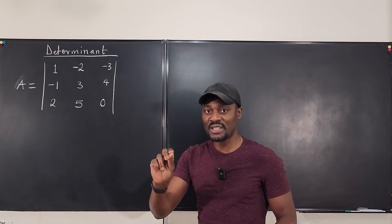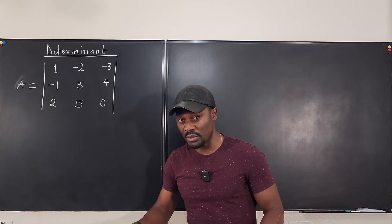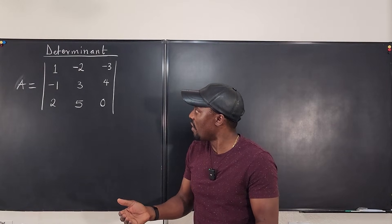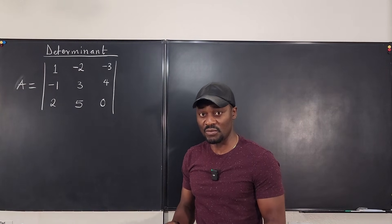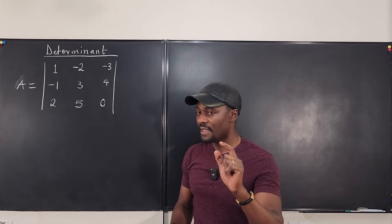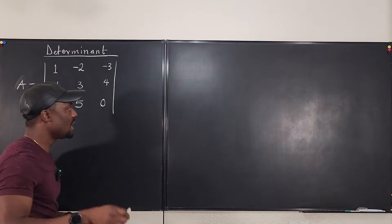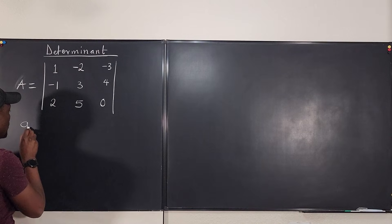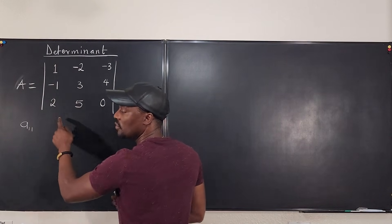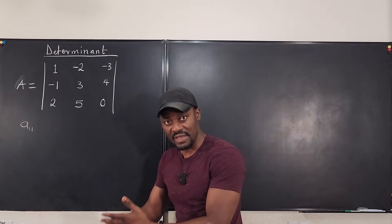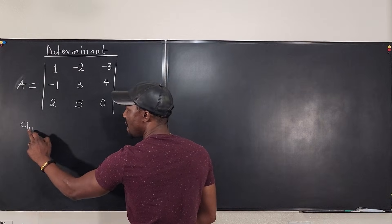Each element in your matrix has what you call a cofactor. So what is the cofactor of, for example, the element 1? Let's say we want to compute the cofactor of 1. It occupies position row 1, column 1, so we call it element a₁₁. Remember, you always name the row first, then the column — so it's the first row, first column, element a₁₁.